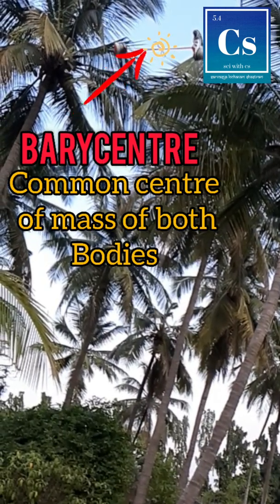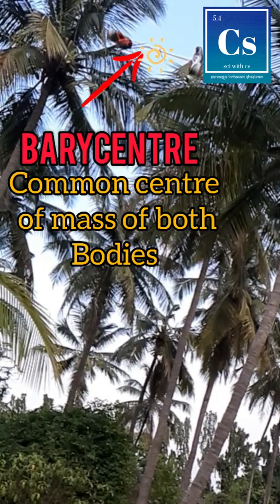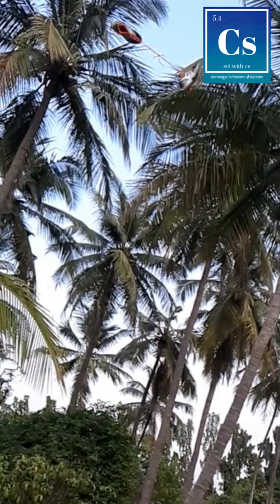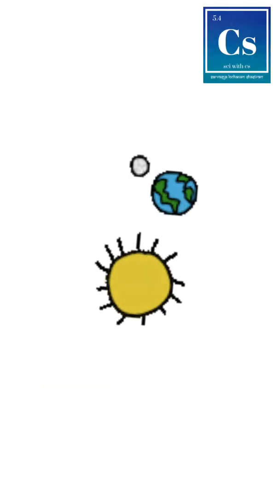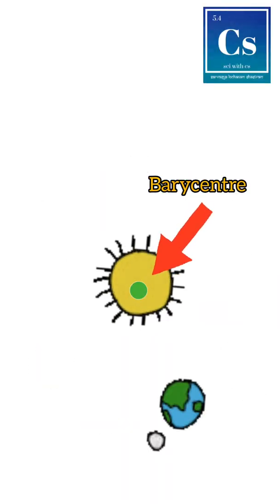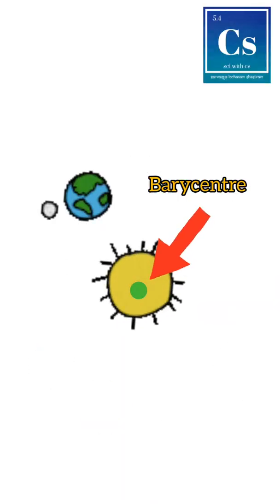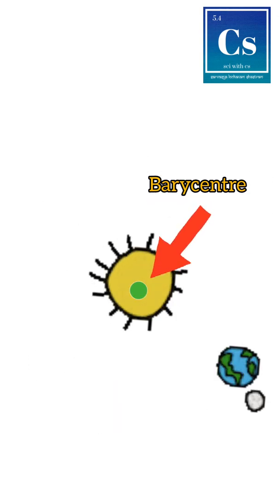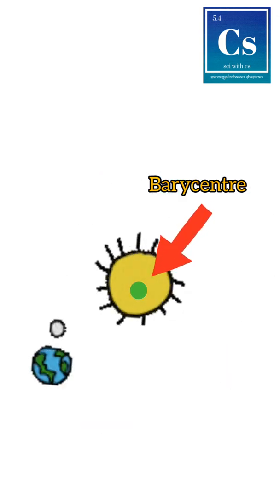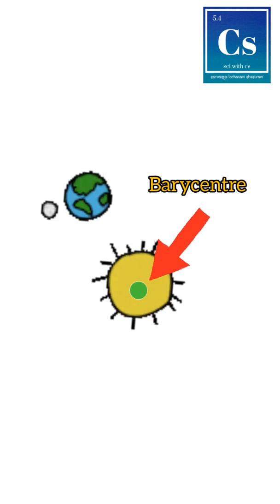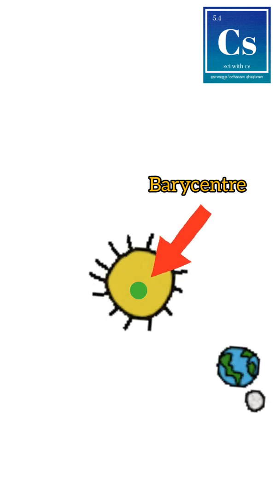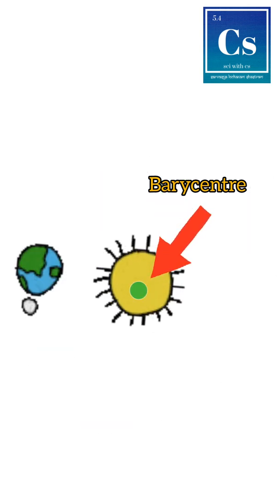In the case of our Earth and Sun, the Sun is much heavier than the Earth, so the common center of mass, or barycenter, is shifted toward the Sun and lies inside it. Because of this, we can't visibly see the Sun's rotation around that point.